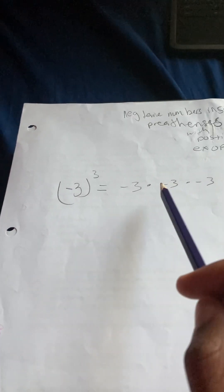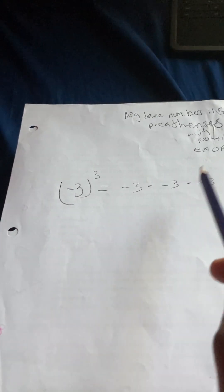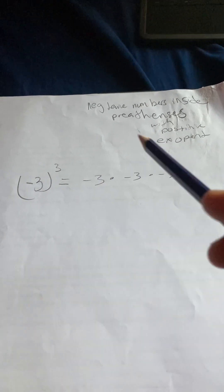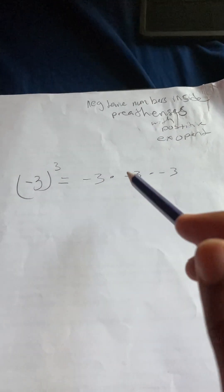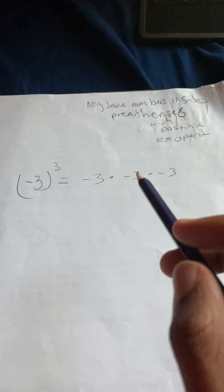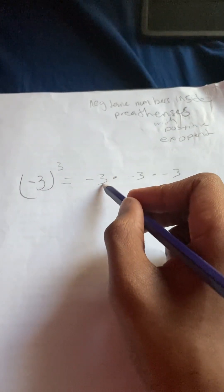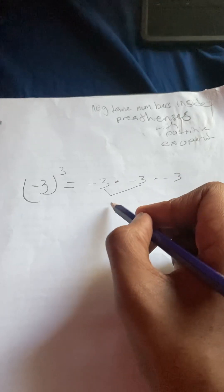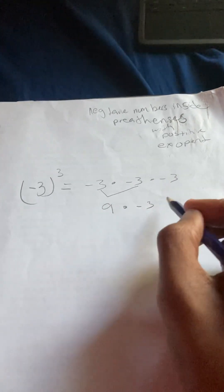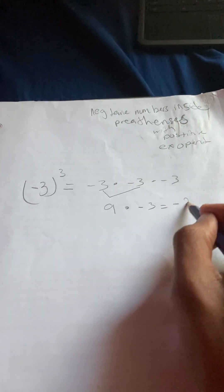You always want to use the dot when you're in 7th grade or higher. You don't want to use your x because x can be a variable. That's why you want to make sure that you use the dots instead of the x's. So negative 3 times negative 3 equals 9. Then we're going to times it by another negative 3 and we get negative 27.